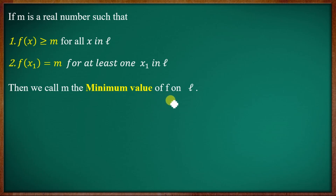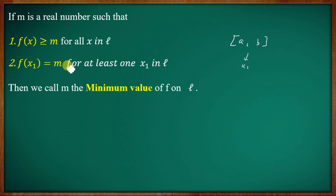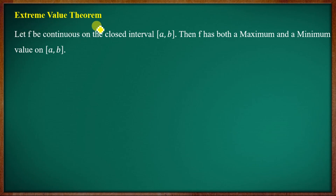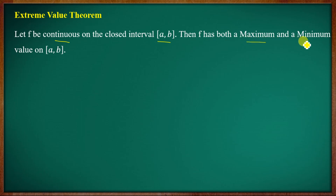Then we call small m the minimum value of f on L. Now the topic is the Extreme Value Theorem. If f is continuous on a closed interval [a, b], then f has both a maximum and minimum value on the closed interval [a, b].